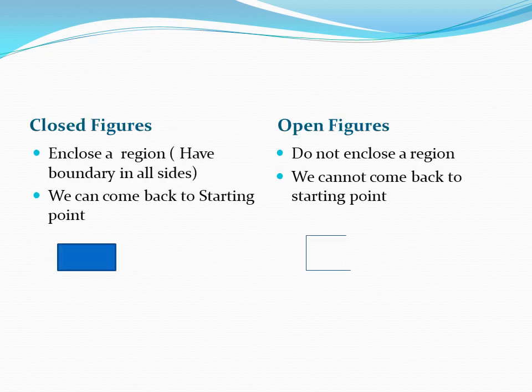Next, closed figures and open figures. A closed figure is bounded by all sides — it encloses a particular region. If you start from a particular place, you can come back to the same place. An open figure does not have an enclosed region and we cannot come back to the starting point. By looking at the pictures, you can easily identify and understand.